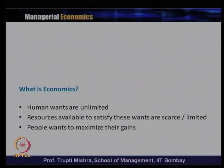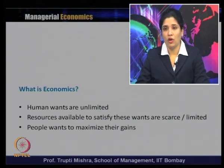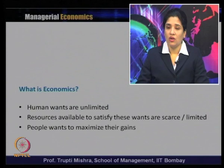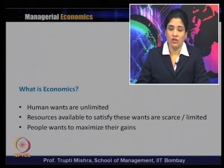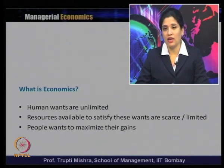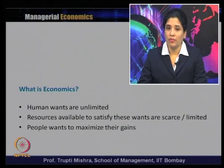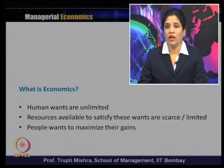What is economics? To understand how economics became the study of scarcity and choices, we need to understand that human wants are unlimited. Whether you talk about an individual, a group of people, or the economy as a whole, human wants are always unlimited. We always have a wish list — things we want to get or achieve in a specific time period. But wants are unlimited because there is always a gap between what we want and what we can satisfy.